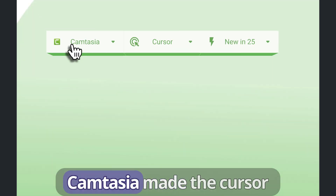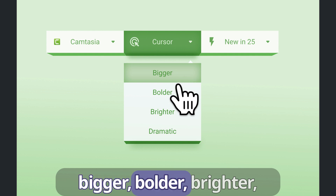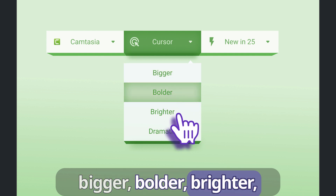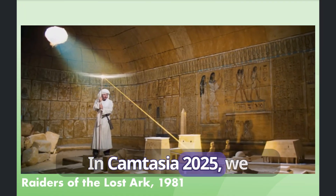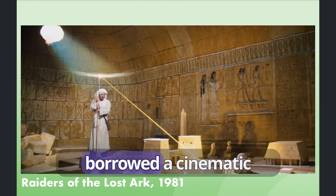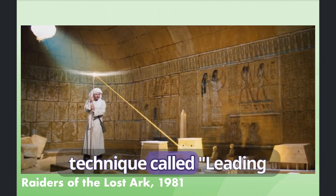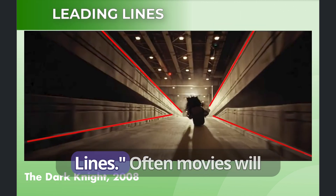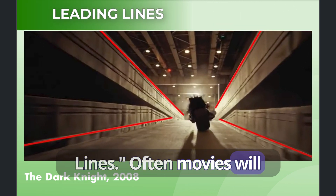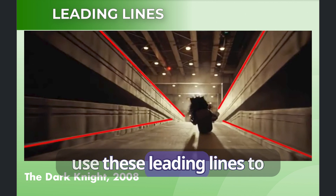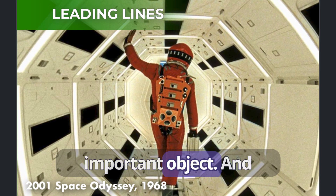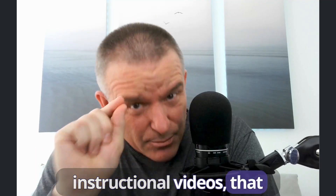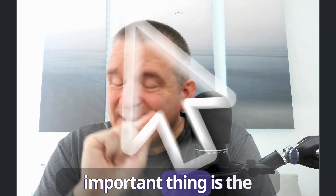In previous versions, Camtasia made the cursor bigger, bolder, brighter, even more dramatic. In Camtasia 2025, we borrowed a cinematic technique called leading lines. Often movies will use these leading lines to guide the viewers to an important object. In instructional videos, that important thing is the cursor.